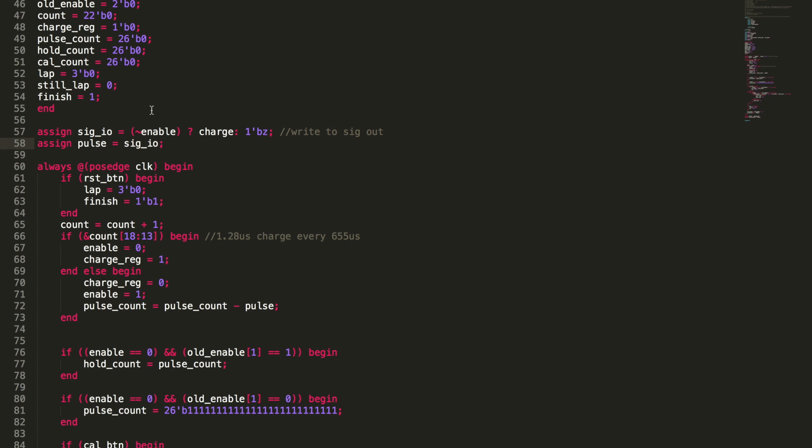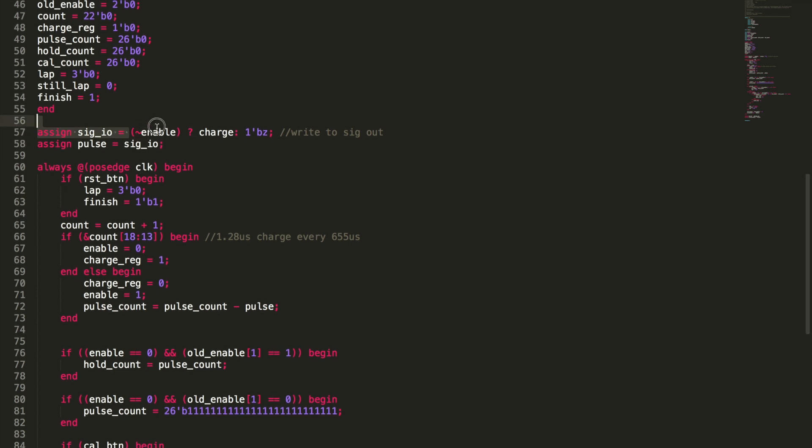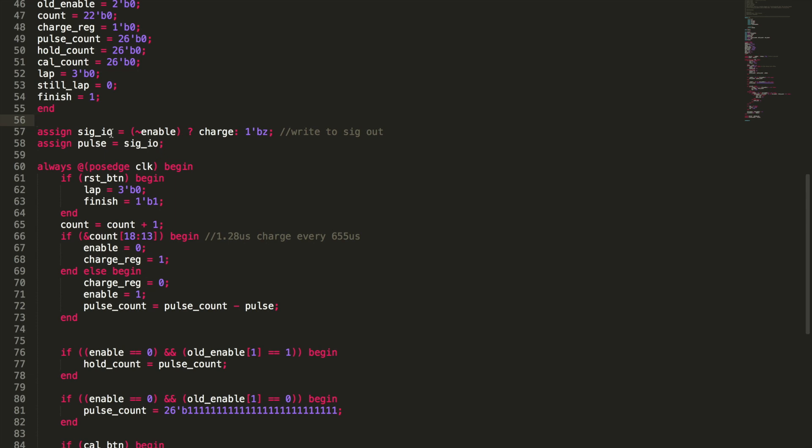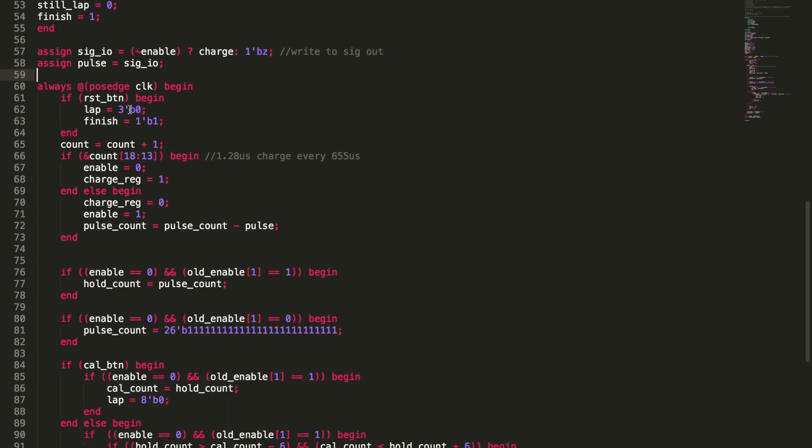So here's that special statement for that IO signal. So basically if enable is in this case, a zero, we're going to set SIG IO to equal charge. If enable is a one, then we're going to set SIG IO to equal basically the high impedance state. Then outside of that, we're going to set pulse equal to SIG IO. So that's when we're measuring it. We want to see how long is this pulse. Then we're going to go into this always loop. We're going to begin the always loop.